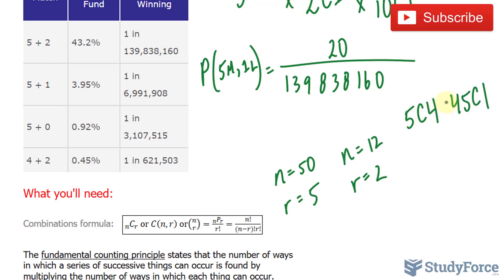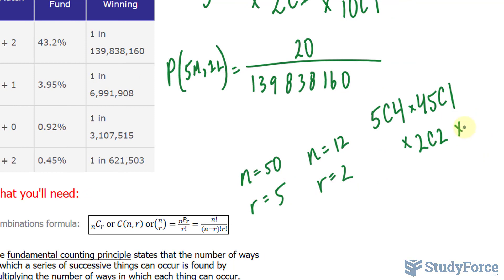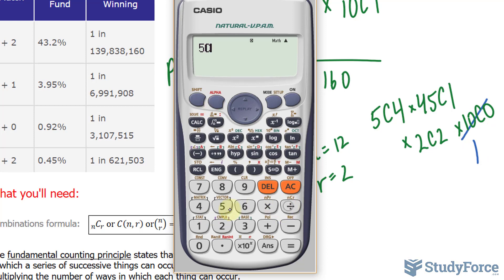So we're going to multiply this by 45 choose 1, and we'll multiply that by the two numbers that you chose, both of which were correct, of those lucky numbers. And of the 10 that weren't chosen, you luckily chose none of those. So 10 choose 0. 10 choose 0 is equal to 1. So 5 choose 4 times 45 choose 1 times 2 choose 2, times 1 times 1, we can just write down 1. We have 225.